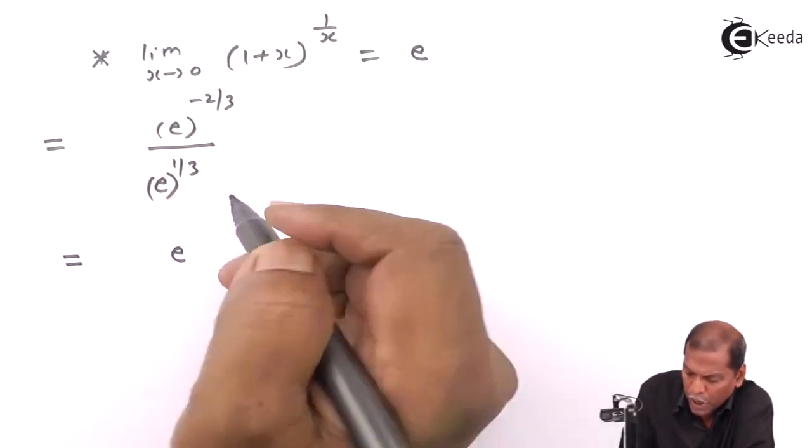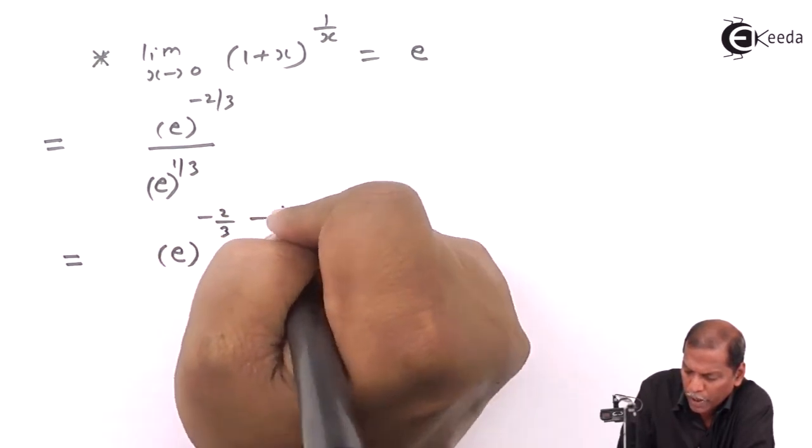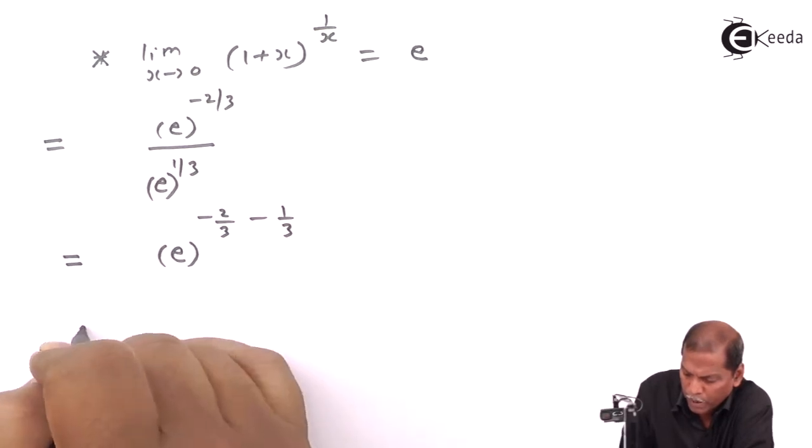On further simplifying we get e raised to minus 3 upon 3,